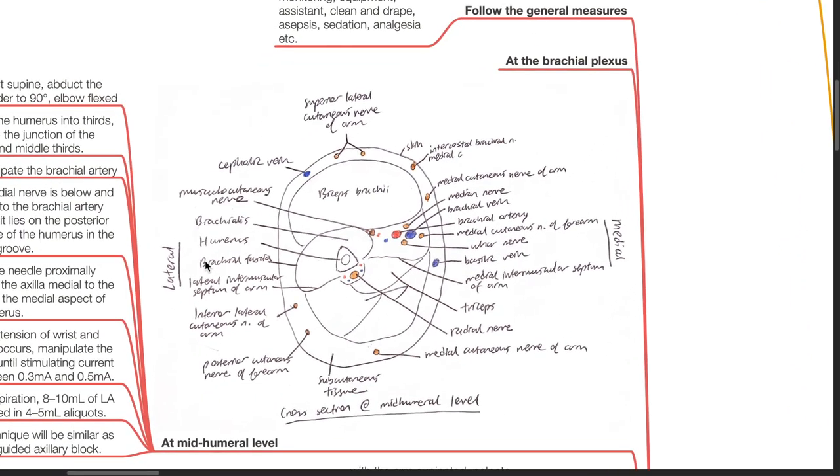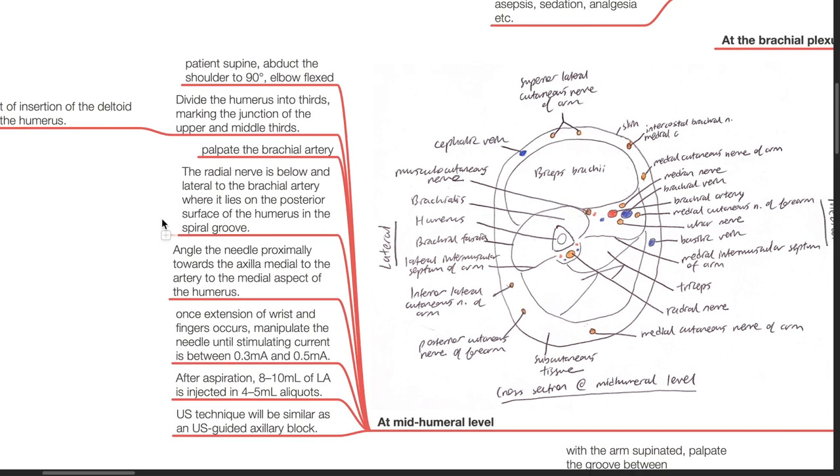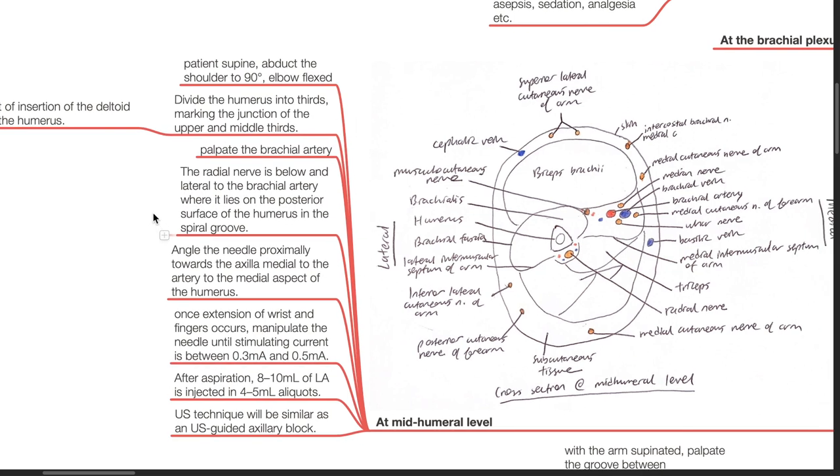At the mid-humeral level, place the patient supine. Abduct the shoulder to 90 degrees with the elbow flexed. Divide the humerus into thirds, marking the junction of the upper and middle thirds, which is the point of insertion of the deltoid into the humerus. Palpate the brachial artery. The radial nerve is below and lateral to the brachial artery, where it lies on the posterior surface of the humerus in the spiral groove. Angle the needle proximally towards the axilla, medial to the artery, to the medial aspect of the humerus.